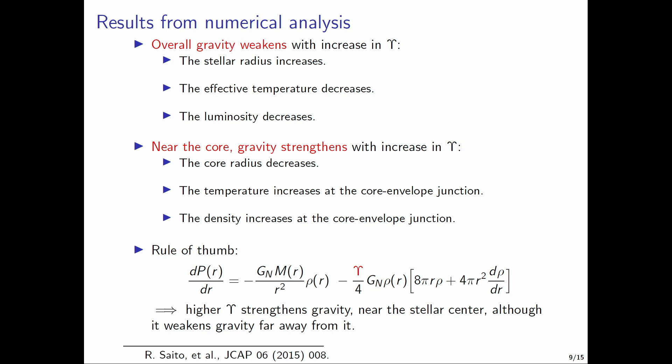This seemingly counterintuitive result can be explained through this rule of thumb where the first term inside the square bracket dominates very close to the center, and for positive epsilon values this strengthens gravity. However far away from the center this term is negative and it starts dominating over the first, and therefore for positive epsilon values we have a weakening of gravity. However this is still a rule of thumb; one needs to solve the entire stellar structure equations to obtain these results.